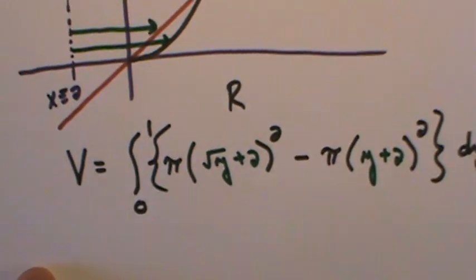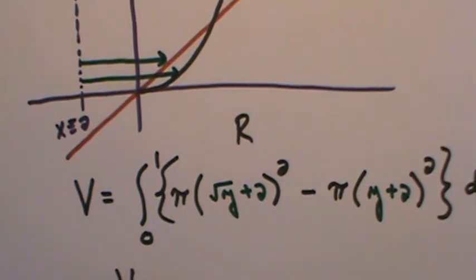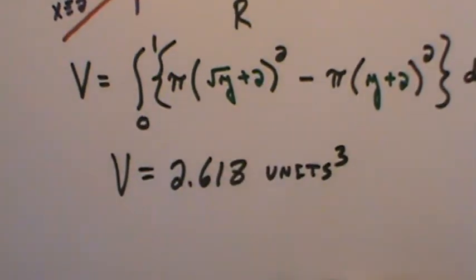So I expect that volume to be much larger. And so, on this one, it told me that my volume, compared to the previous answer of 0.524, is 2.618. 2.618 units cubed. Because that's going to be a volume.